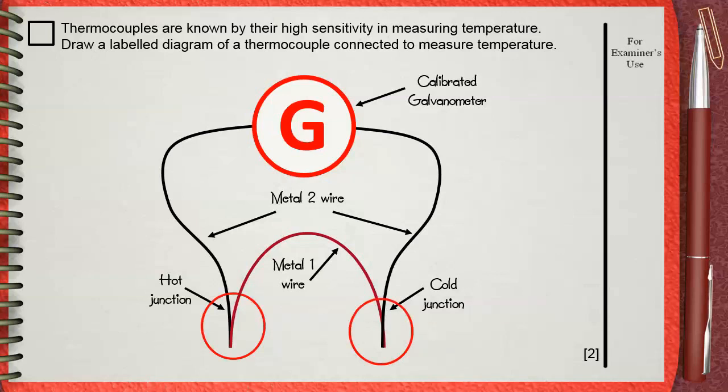You can also draw some pieces of ice on the cool junction. Now what you see is a complete labeled diagram for a thermocouple. This is for two marks.